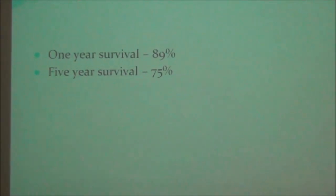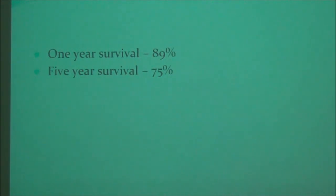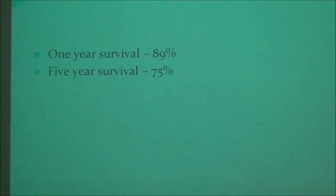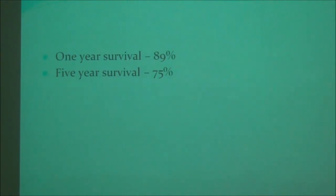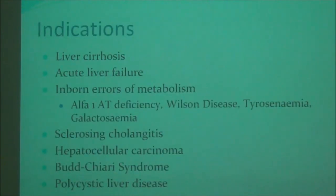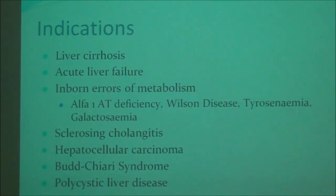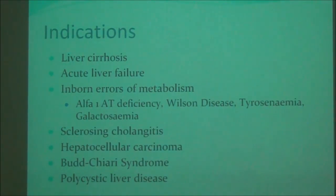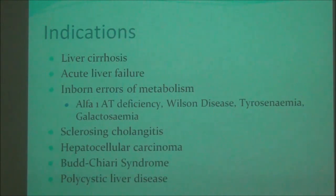The one-year survival after a liver transplant is about 89 to 90 percent, making it a fairly successful procedure, while the five-year survival is about 75 percent. Without a liver transplant, patients with the conditions that indicate it would otherwise not survive beyond a few months. The commonest indication for liver transplant in the adult population is liver cirrhosis, which can be due to any cause including hepatitis B, C, or D.